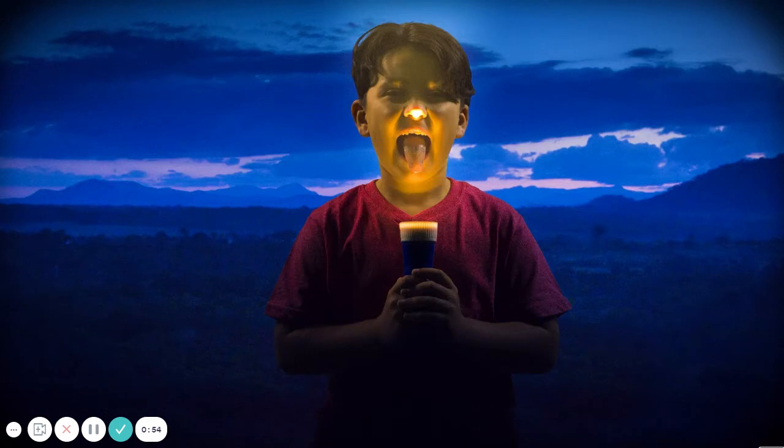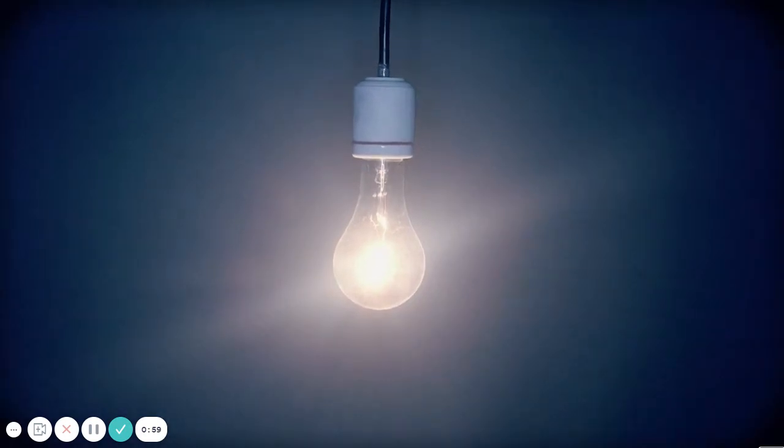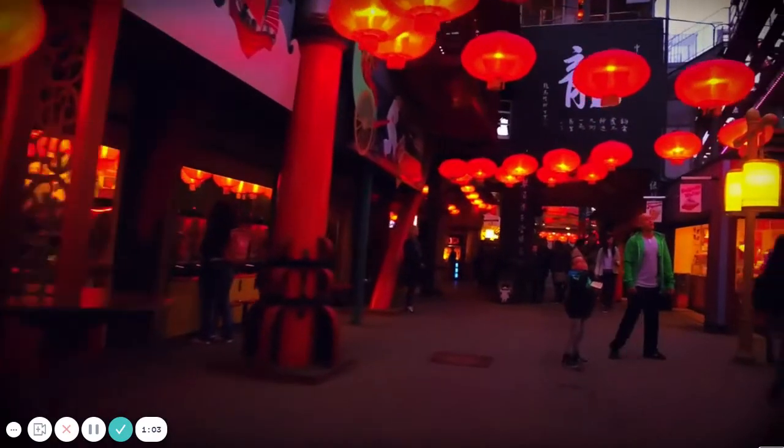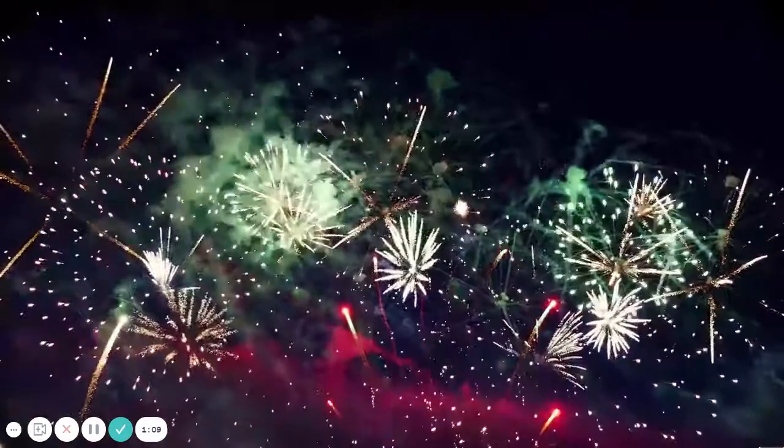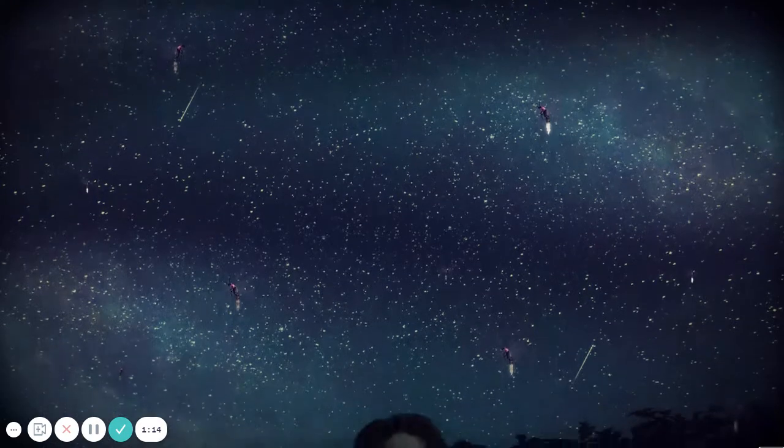These help us to see at night: flashlights, ceiling lights with light bulbs, street lights, lanterns, computer screens, and fireworks. Some animals can make their own light too. On a warm night, have